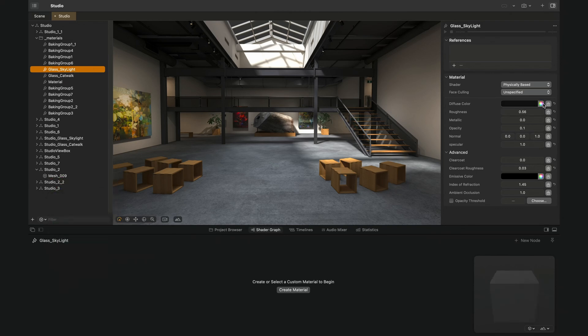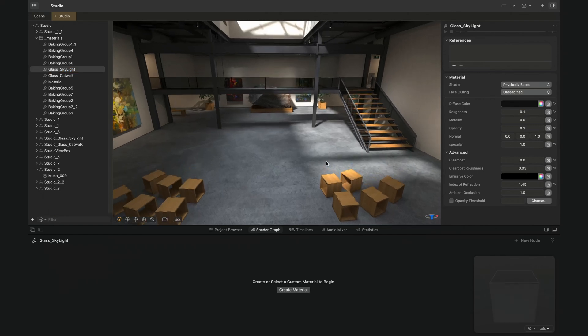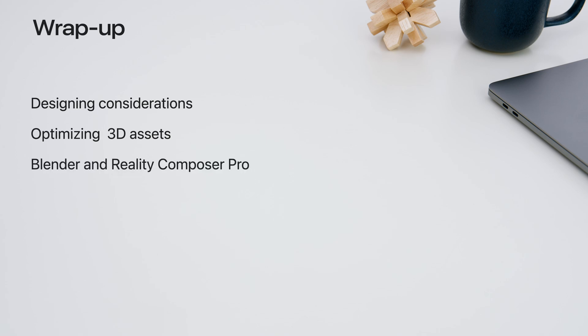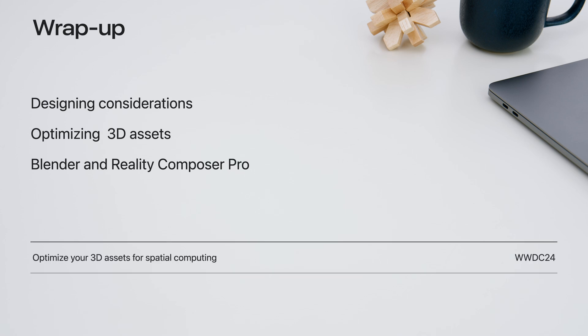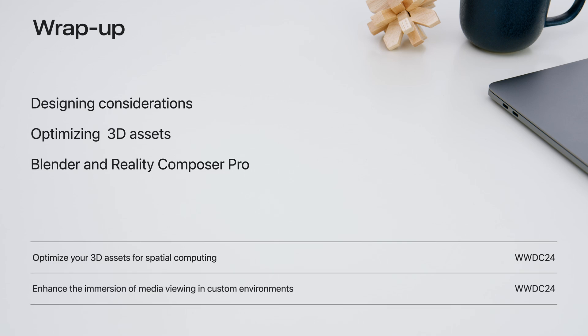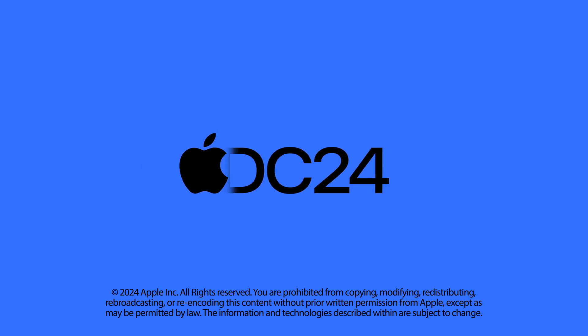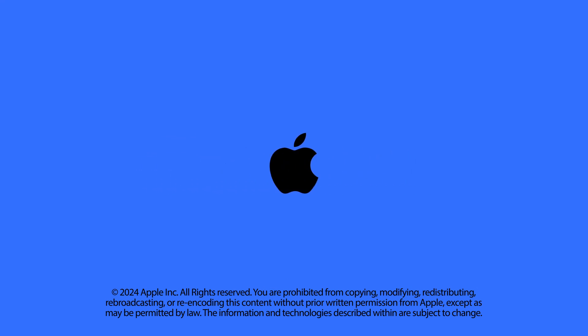At this point, you might need to add some other interesting elements to your 3D scene, like video components. In this session, we looked at how to design, create, and optimize an environment to run on visionOS. We shared a case study of a studio design for watching media, and we shared tips when going between DCCs and Reality Composer Pro. We can't wait to see the environments and experiences that you will create. We'll see you next time.